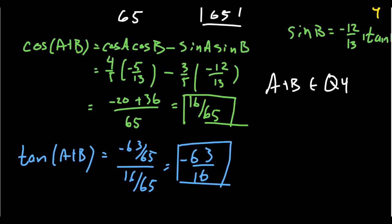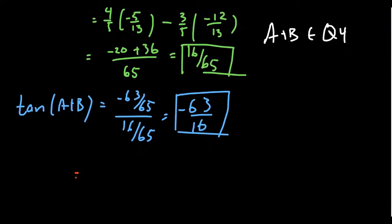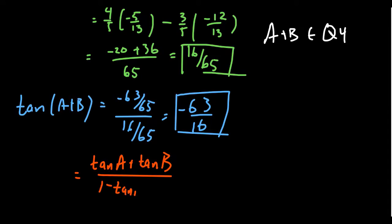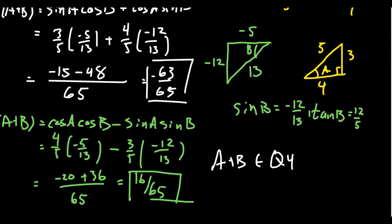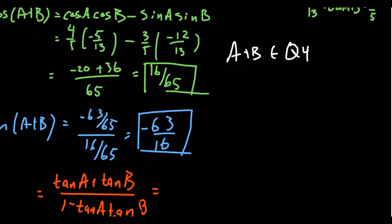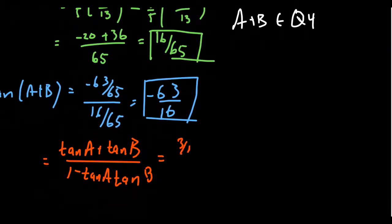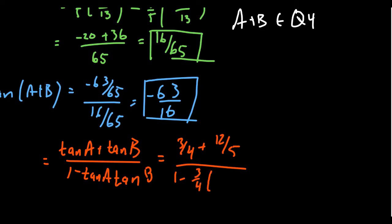If you wanted to check this with the angle sum identity for tangent, that would be appropriate. So tangent of A plus tangent of B over 1 minus tangent of A times tangent of B. Tangent of A is 3 fourths and tangent of B is 12 fifths. So you get 3 fourths plus 12 fifths over 1 minus 3 fourths times 12 fifths. To add these, let's clear the denominators by multiplying top and bottom by 20.